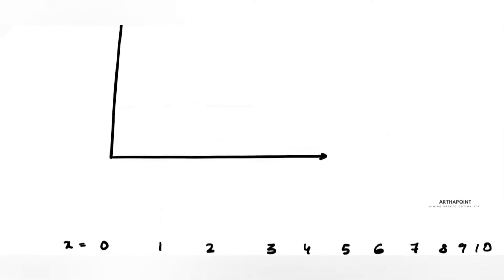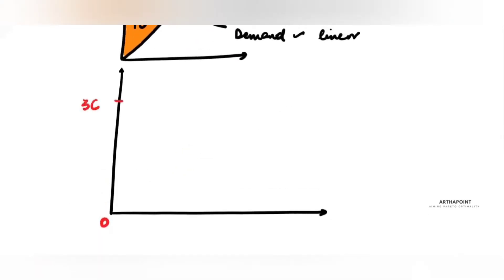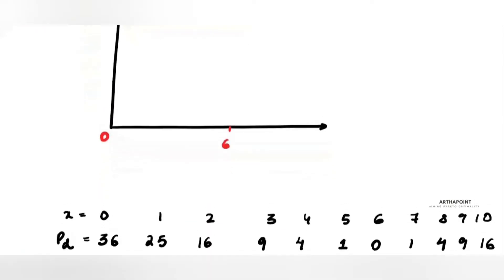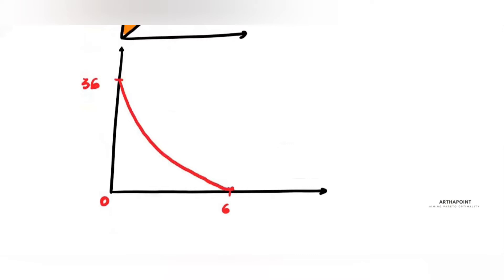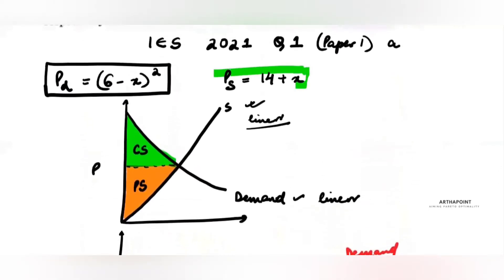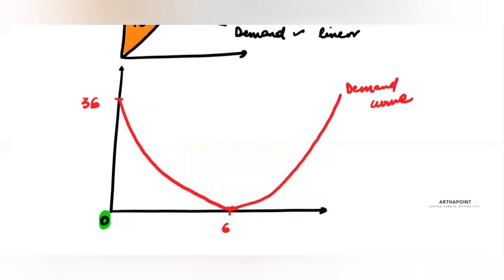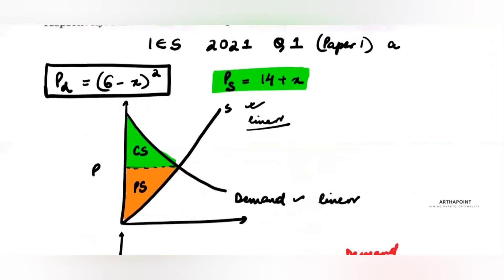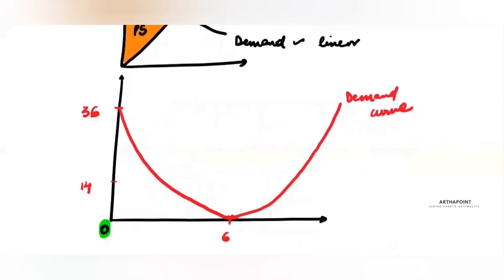So when X=0 the price is 36, when X=6 the price is 0, and in between it's a parabola. This is your demand curve. Now let's make the supply curve. The supply curve is given as P_s = 14 + X. When X=0, price is 14; when X=1, price is 15. This is your supply curve.